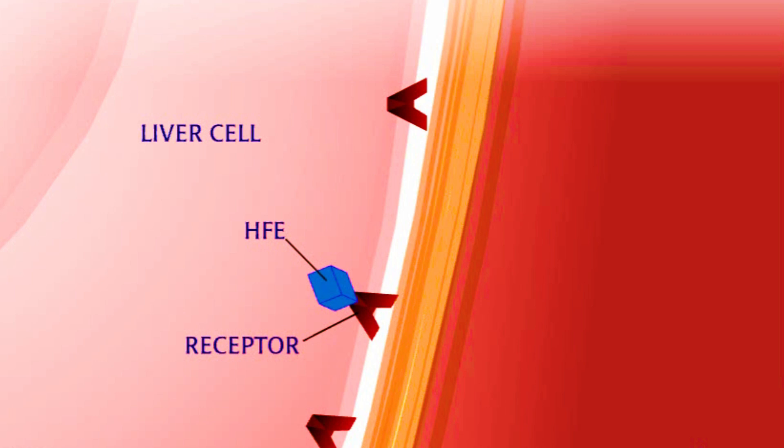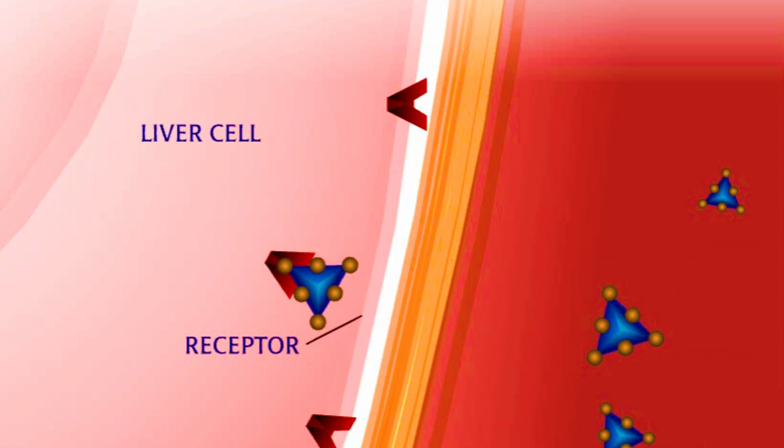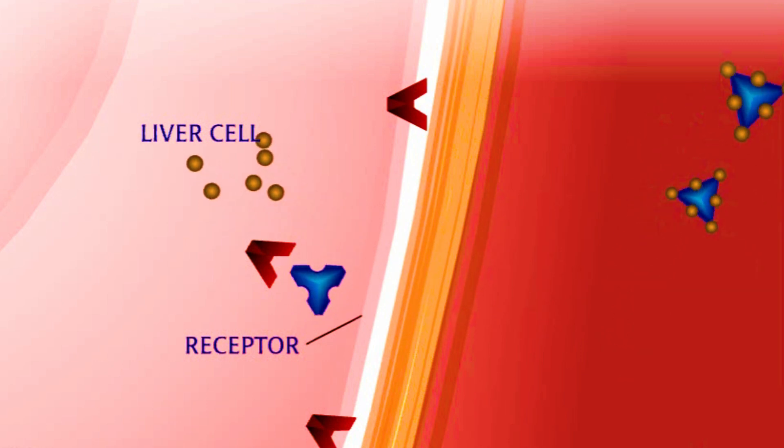To get iron inside a liver cell, transferrin docks to a receptor on the outside. HFE is usually attached to this receptor, controlling its ability to deliver iron to the interior of the liver cell. If HFE remains attached, iron is not delivered into the cell. If HFE is absent, as for most people with hemochromatosis, the whole complex of receptor, transferrin, and iron is engulfed and the iron is released into the cytoplasm of liver cell.